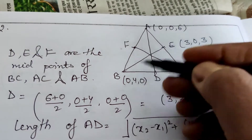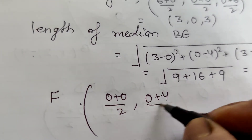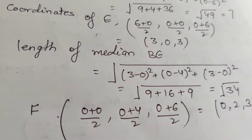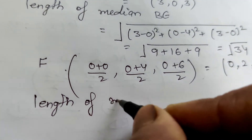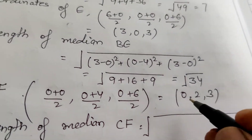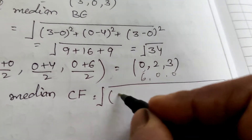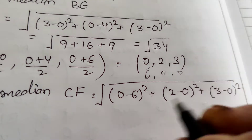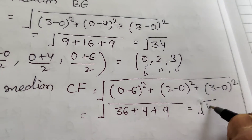Coordinates of F, midpoint of AB: ((0+0)/2, (0+4)/2, (6+0)/2) = (0, 2, 3). Length CF: distance from C(6, 0, 0) to F(0, 2, 3): √((0-6)² + (2-0)² + (3-0)²) = √(36 + 4 + 9) = √49 = 7.